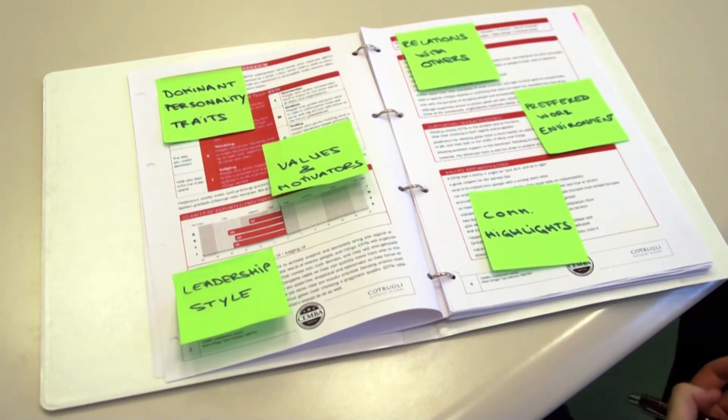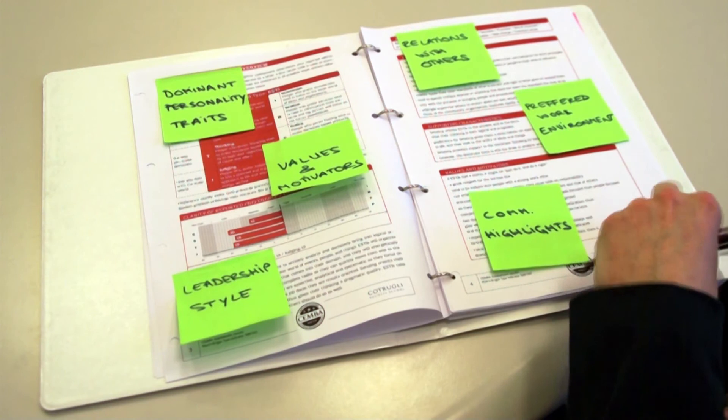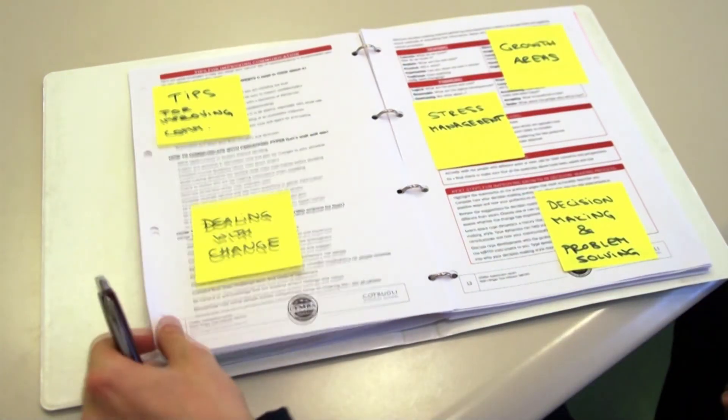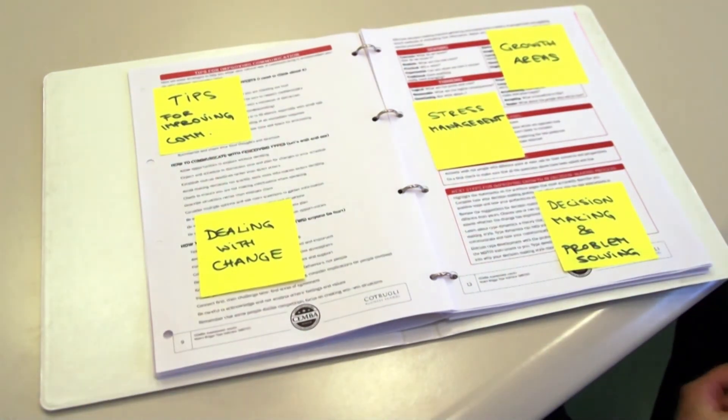What is more important in this case are concrete tips and recommendations for improving your personal communication style, dealing and accepting change, what are the individual growth areas for your type, how it relates to stress management, and what are the decision-making and problem-solving capabilities.